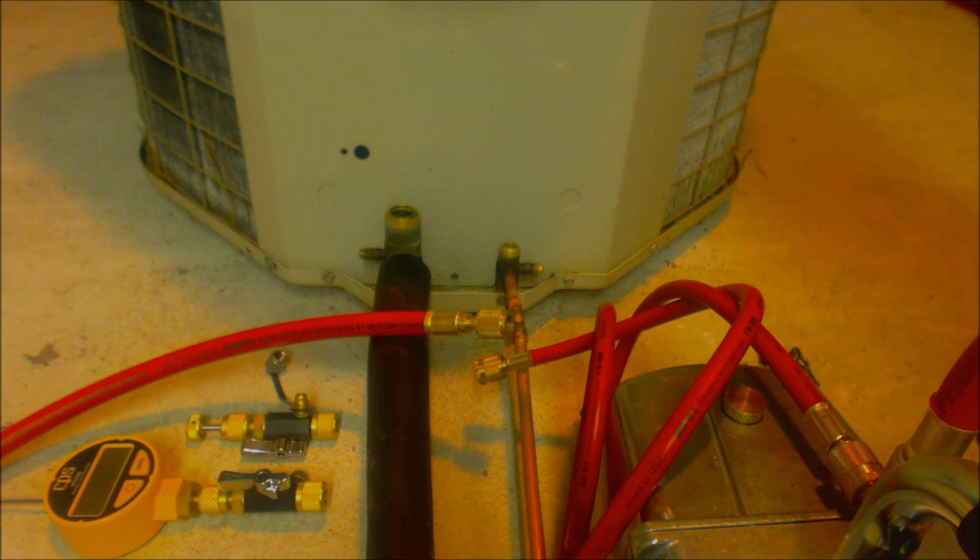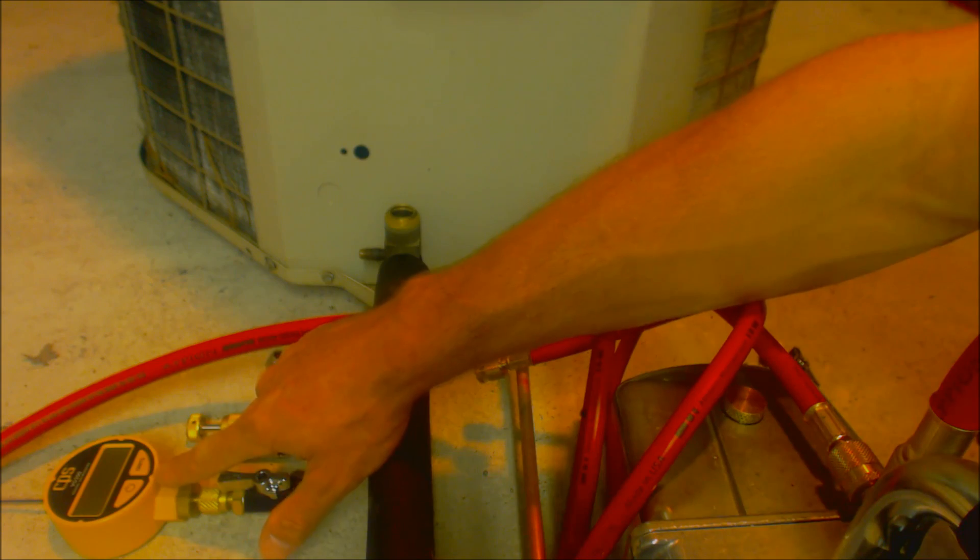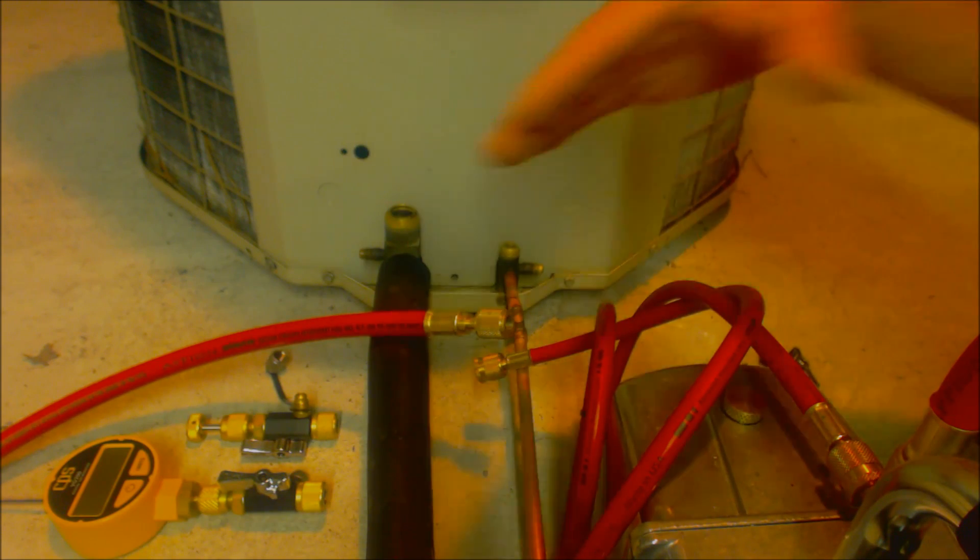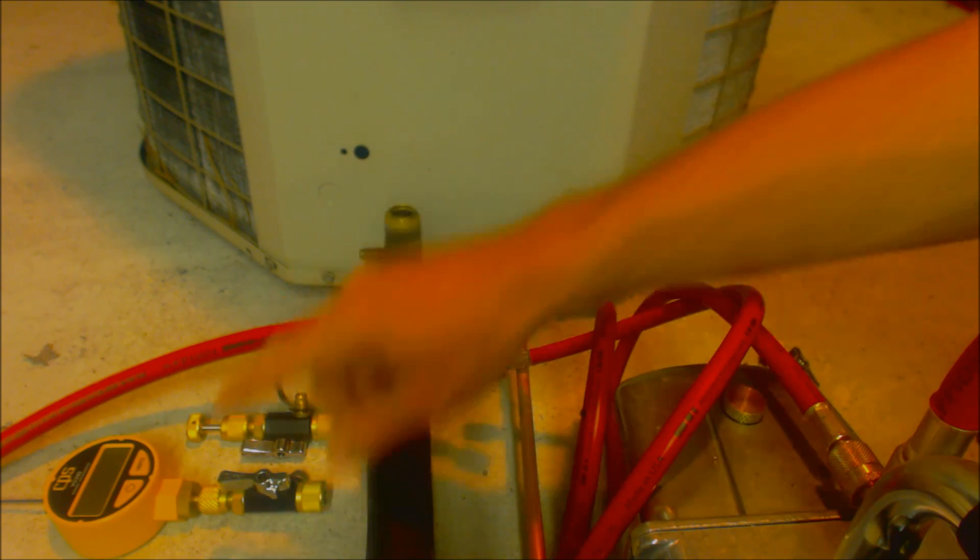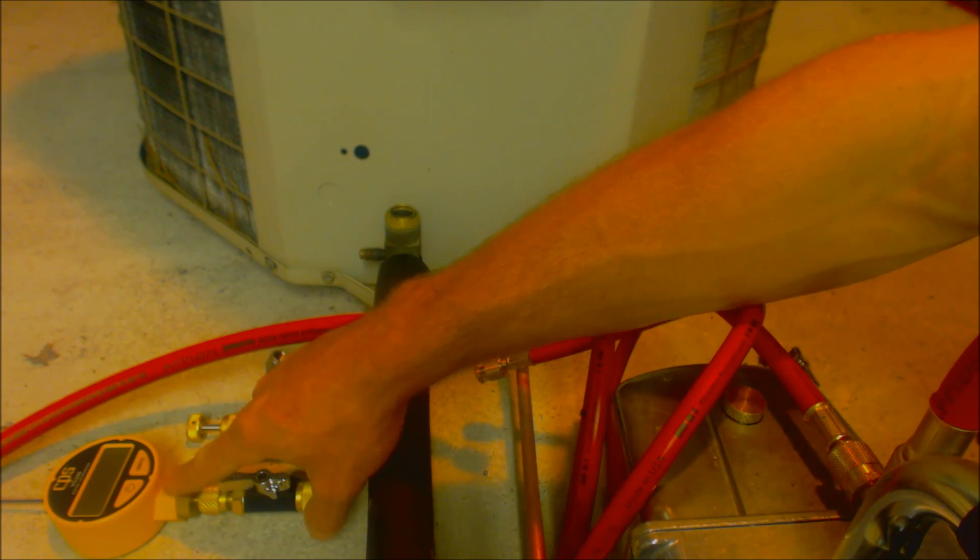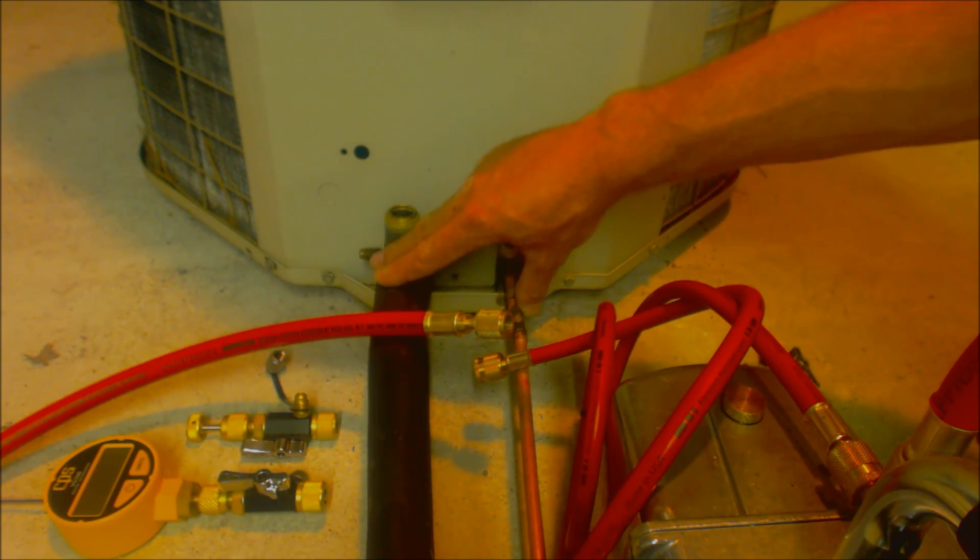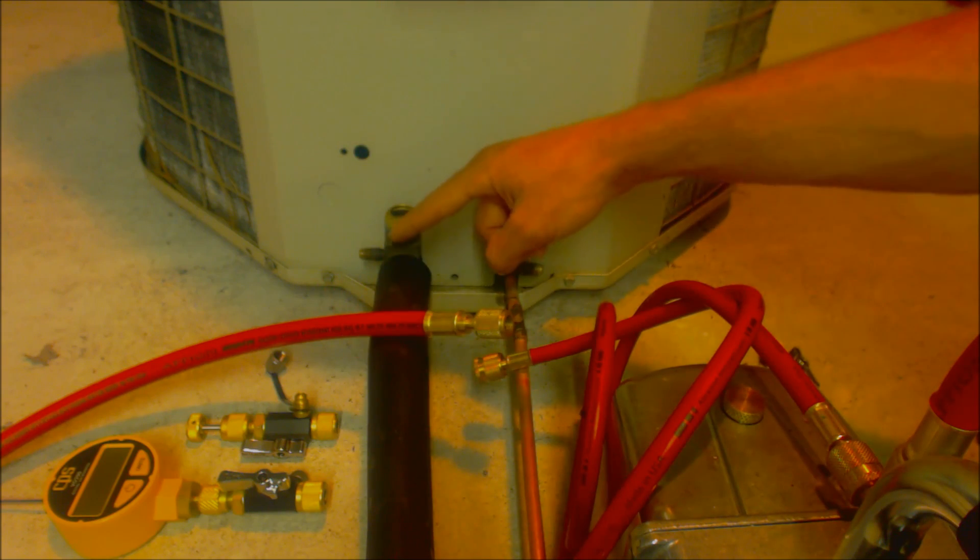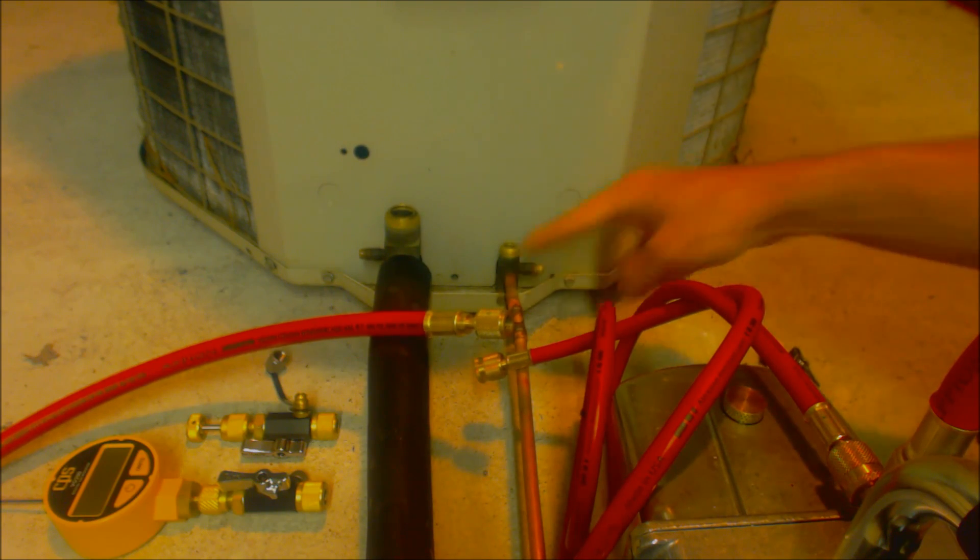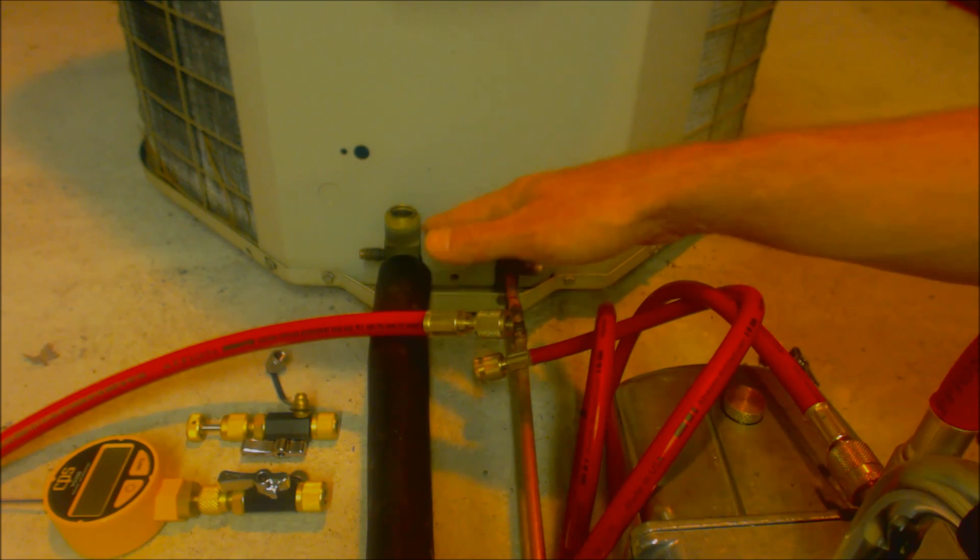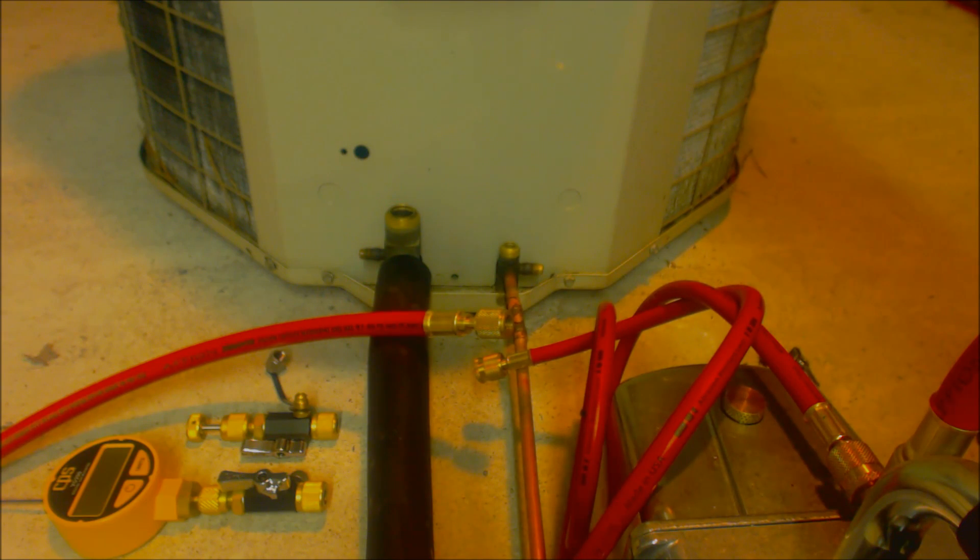So we're going to go ahead and pull a vacuum that's going to be below 500 microns on the micron scale. Then we're going to isolate the vacuum pump and the hoses, and we're still going to keep our micron gauge attached to the line set right here. During this vacuum we're vacuuming the suction line and the liquid line and the evaporator coil. We're pulling a vacuum from both sides. You always want to make sure to pull a vacuum from both sides so that you don't go through the restriction of the metering device all the way over at the evaporator coil which will be the furthest distance away.